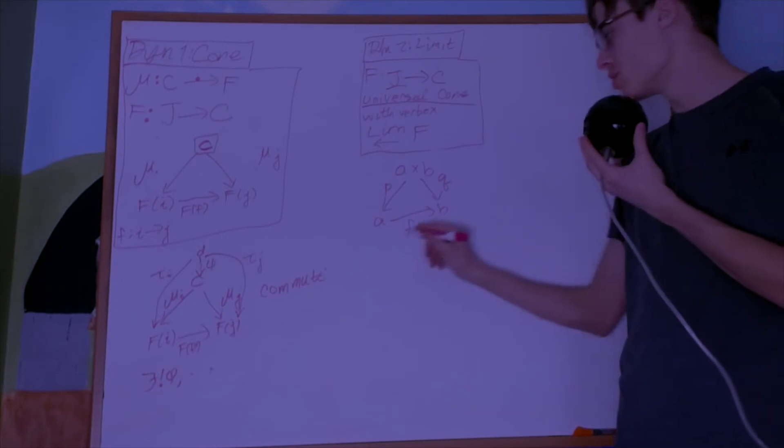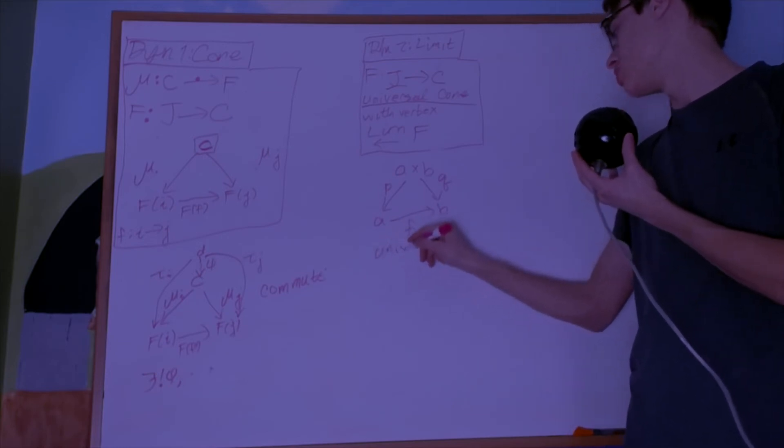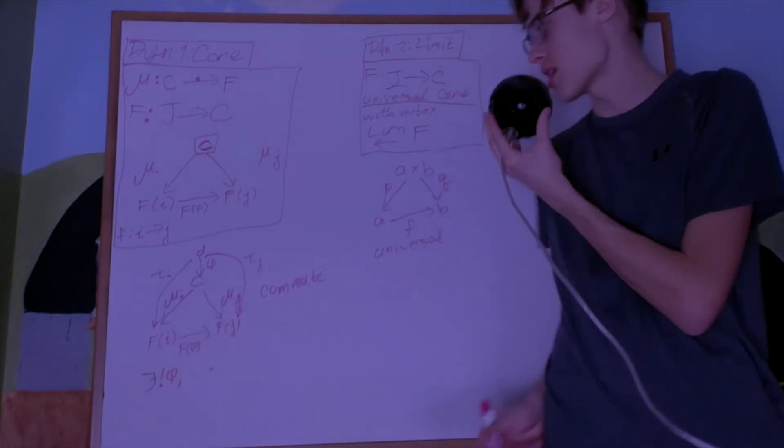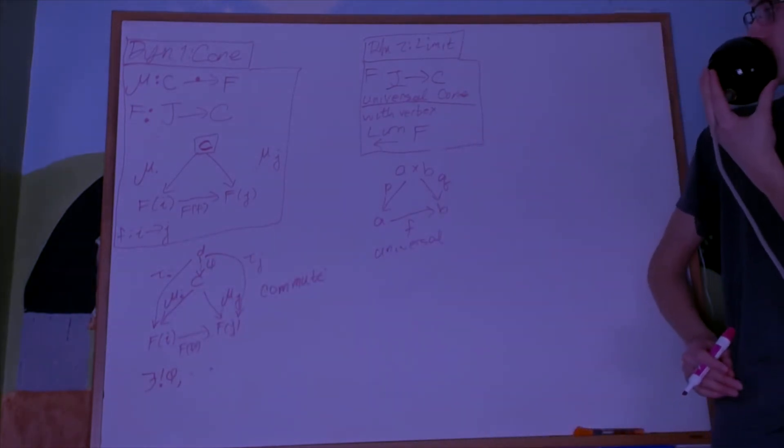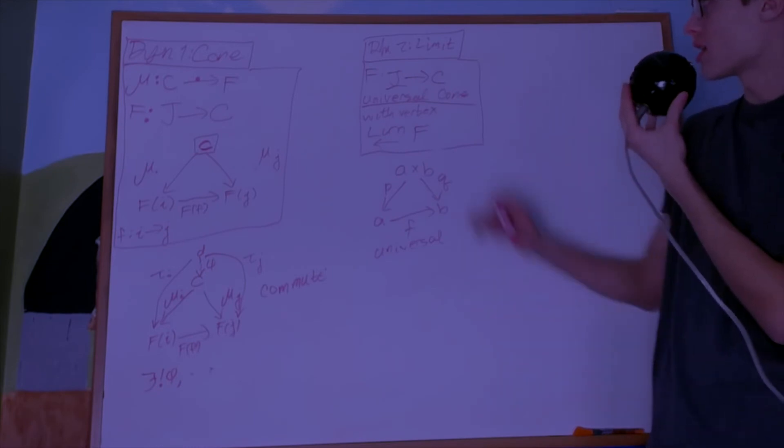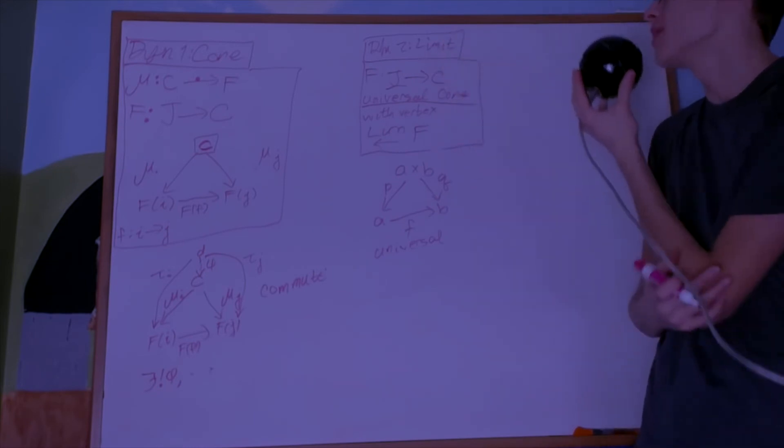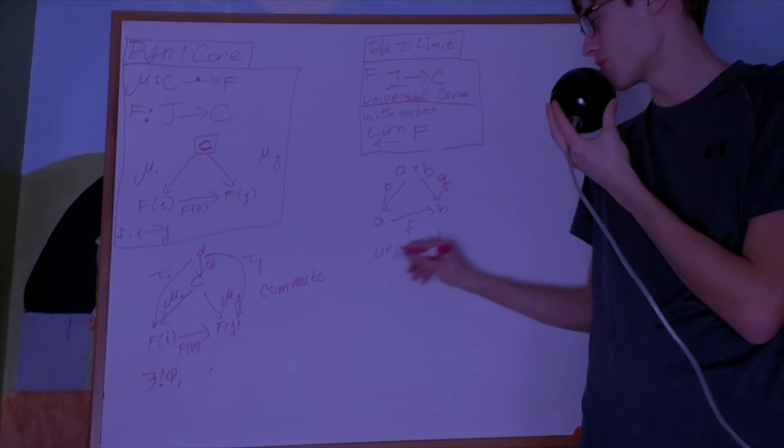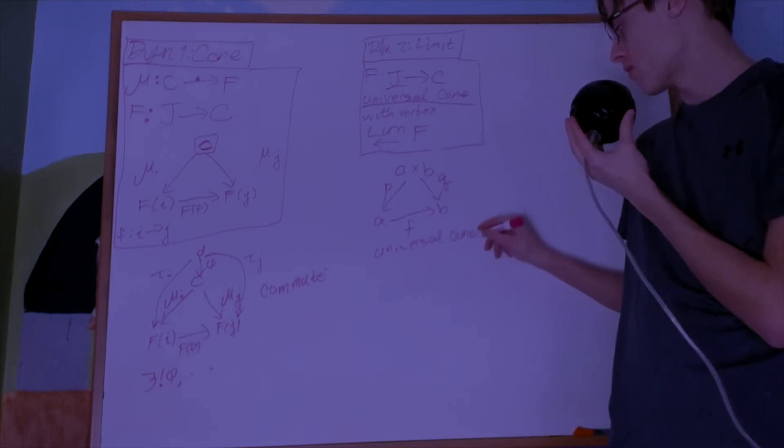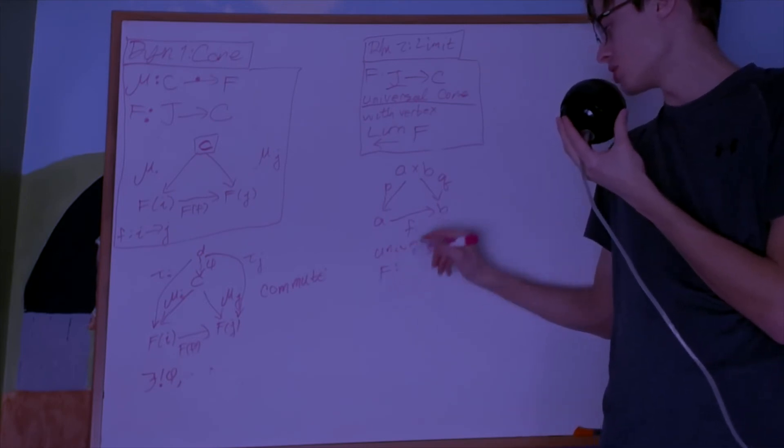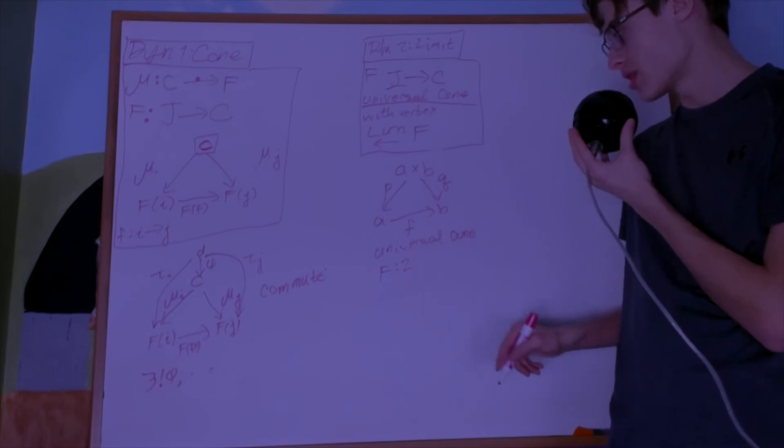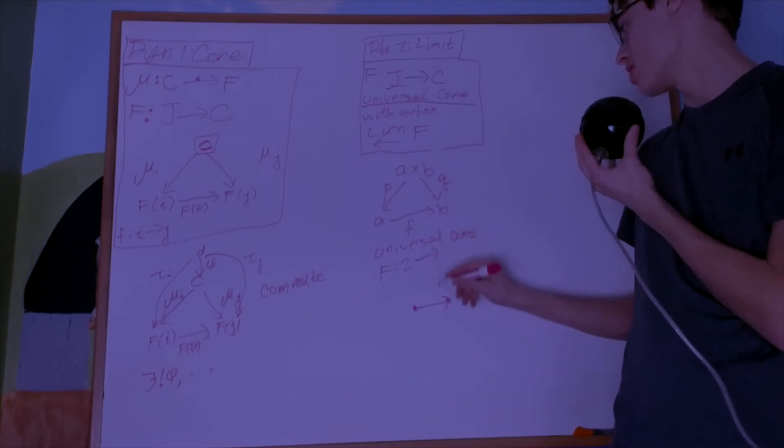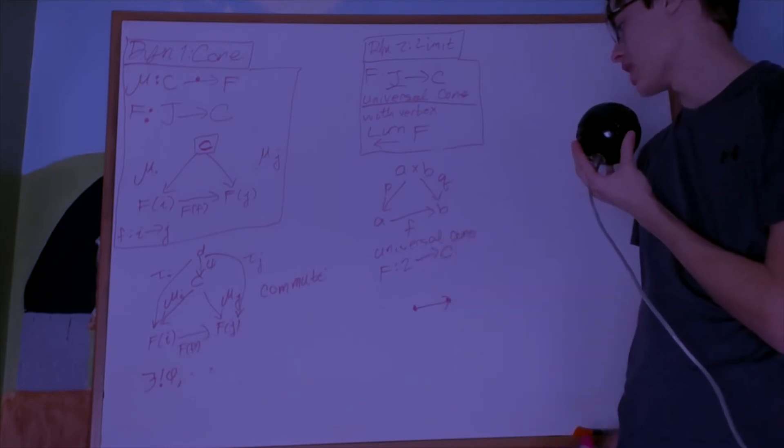And we want this to be a universal cone, meaning that it has this unique morphism for anything that looks like that. So it's a lot like a limit. Really, what this is, is a cone—a universal cone for a functor which is between the two category, which is the category with two objects and an arrow between them, and the actual category C.